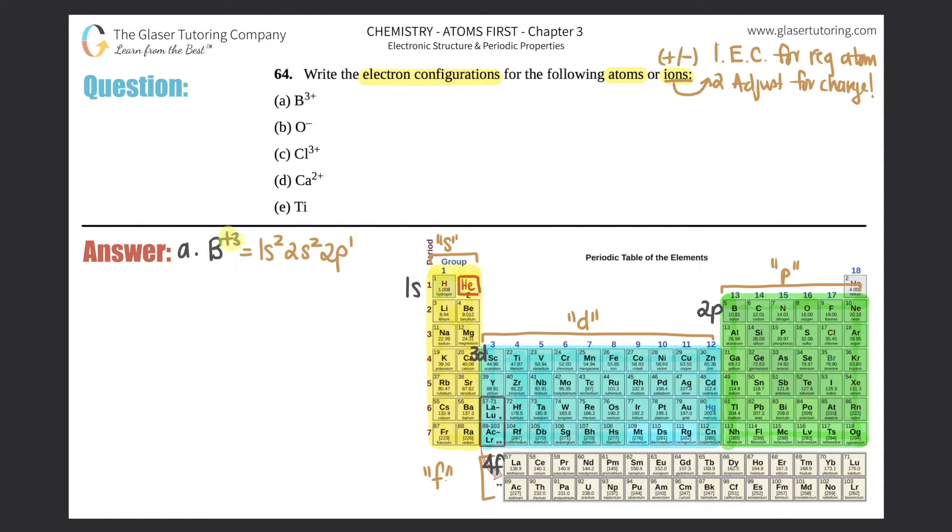But now you adjust for your charge. Plus three means that you lost three electrons, and you always lose from the highest n number or the highest coefficient. In this case it's between ones and twos—twos are higher than ones—so you will take away from the two, the second shell. You always take away from what you wrote last. So you would take away one first, and now you have to take away a total of three, so one from the 2p.